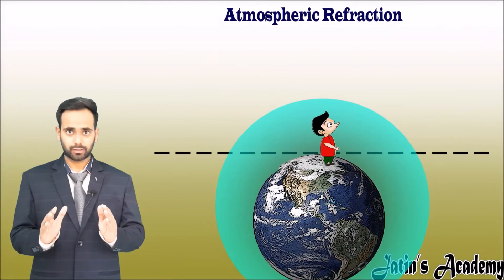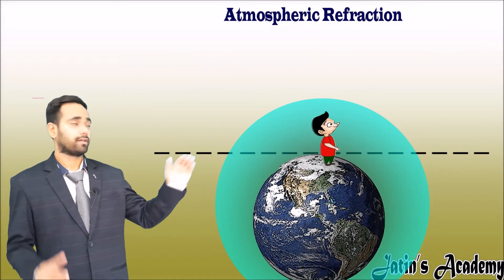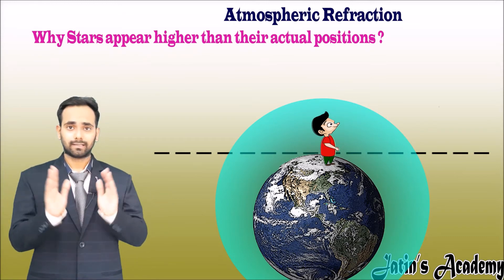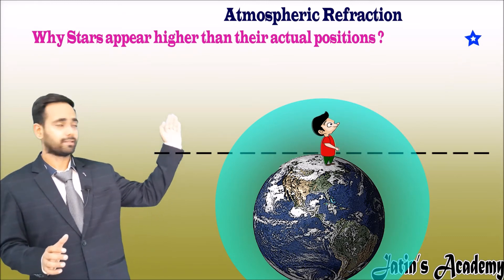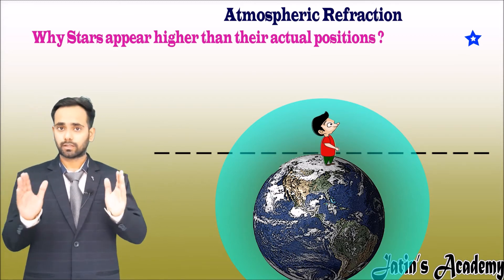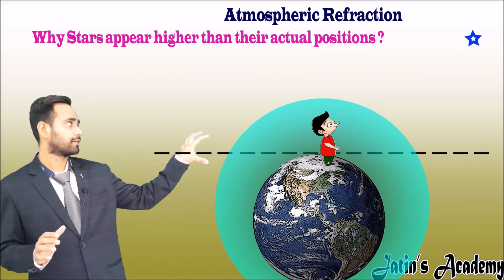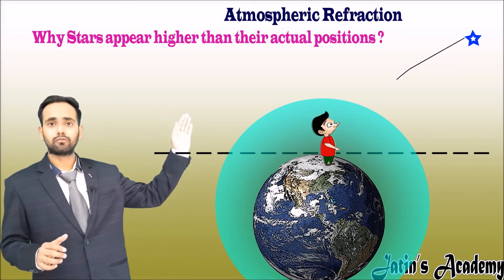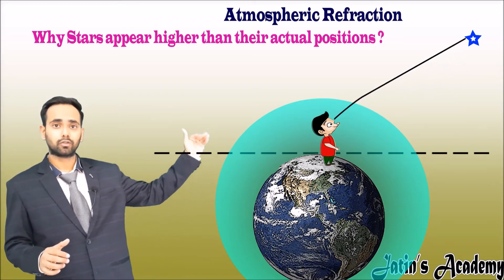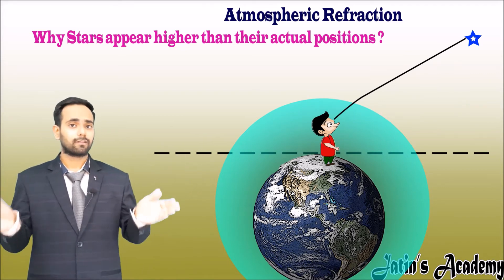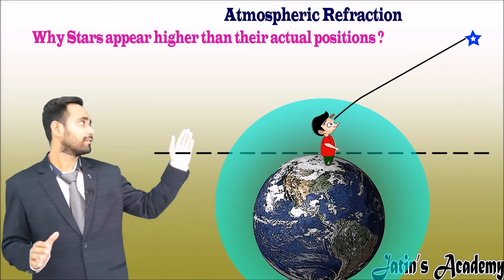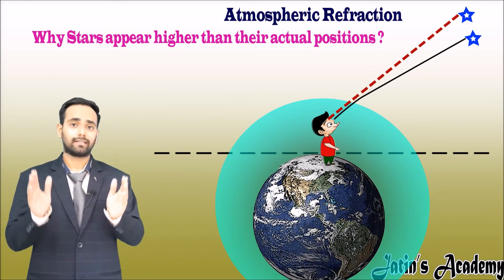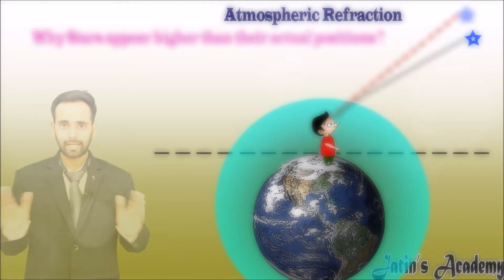Our next question is: why do stars appear higher than their actual position? Stars are in space where there is vacuum, and the observer is on the Earth's surface in the atmosphere. When light comes from vacuum to atmosphere it bends towards the normal, but our eye sees straight. When we extend the line, we get the position of the star higher than its actual position.